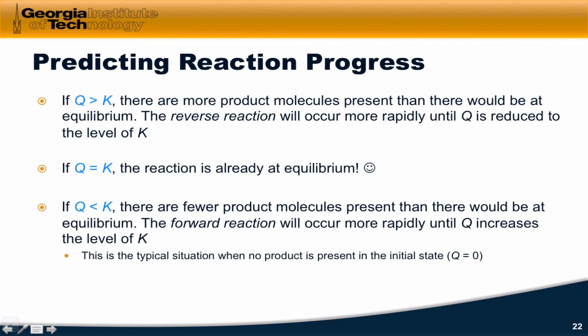If Q is less than K, that means that the numerator of the equilibrium expression is too small. There are fewer product molecules present than there would be at equilibrium, and so the forward reaction will occur more rapidly than the reverse reaction. This causes an increase in the value of Q. It causes bulk production of the products and consumption of the reactants. Q will continue to increase until it reaches the level of K, at which point bulk chemical change will stop.